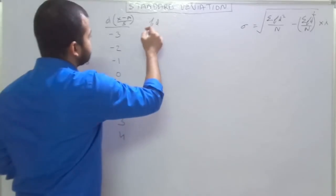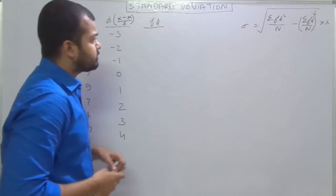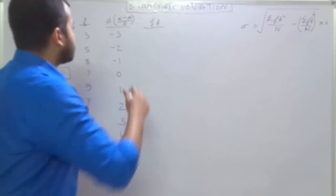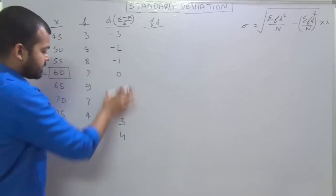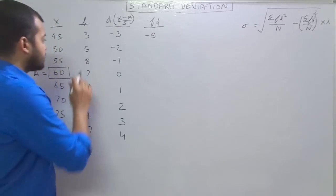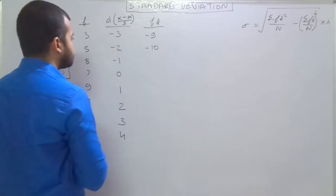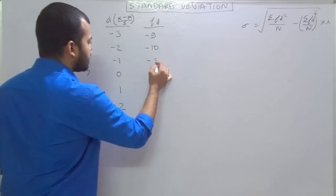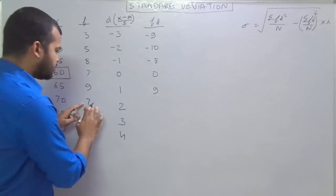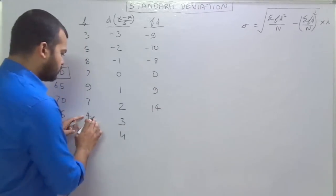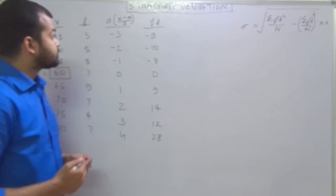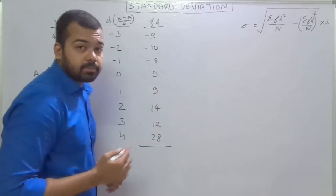Now we have to calculate FD. FD is demanded by the formula — FD means the column of F multiplied by column of D. So 3 into minus 3 is minus 9. 5 into minus 2 is minus 10. 8 into minus 1 is minus 8. 7 multiplied by 0 is 0. 9 into 1 is 9. 7 into 2 is 14. 4 into 3 is 12. And 7 into 4 is 28. Now we have to get the value of summation FD.